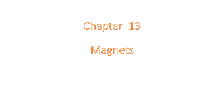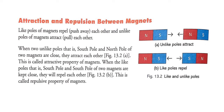Welcome back, children. Today in this video we will continue with Chapter 13, that is Magnets. Let's read about attraction and repulsion between magnets. Like poles of magnets repel — they push away from each other — and unlike poles of magnets attract — they pull towards each other.